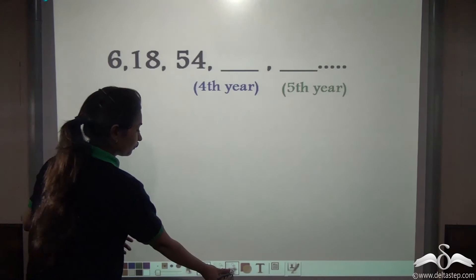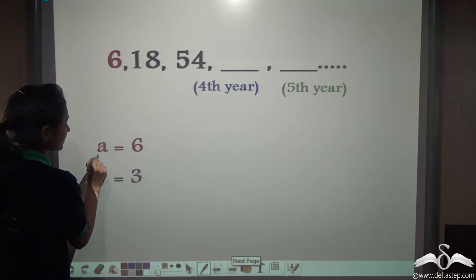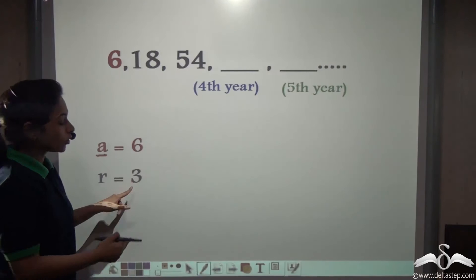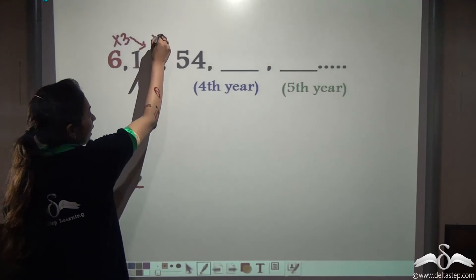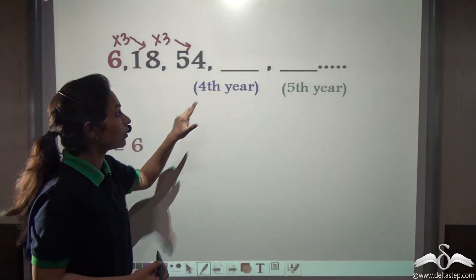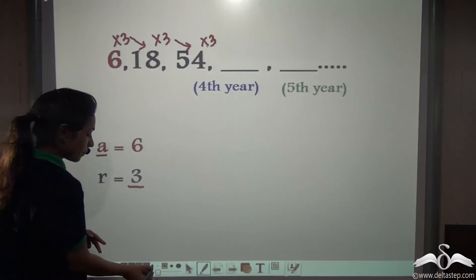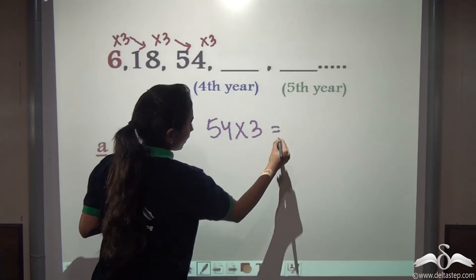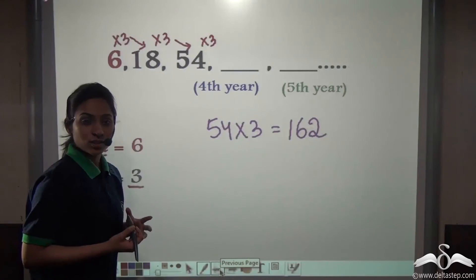Now we know that here the first term of this GP series represented as a is 6 and the common ratio here was 3. Every time she multiplied 3 to all her numbers. You can check 6 into 3, 18. 18 into 3, 54. Now that means the fourth term will be 54 into 3. So just multiplying 54 with 3 will give us the fourth term because the common ratio here is constant. So 54 into 3. How much will it give you? 162. So we got the fourth term.